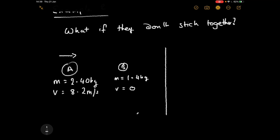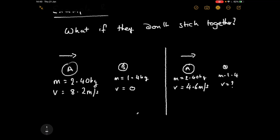Afterwards, after the collision, the objects are not together. We observe that object A is still moving forward but has slowed — its mass is still 2.40 kilograms and its velocity has decreased to 4.6 metres per second. Object B has a mass of 1.4 kilograms, and its velocity is the question mark we need to find.